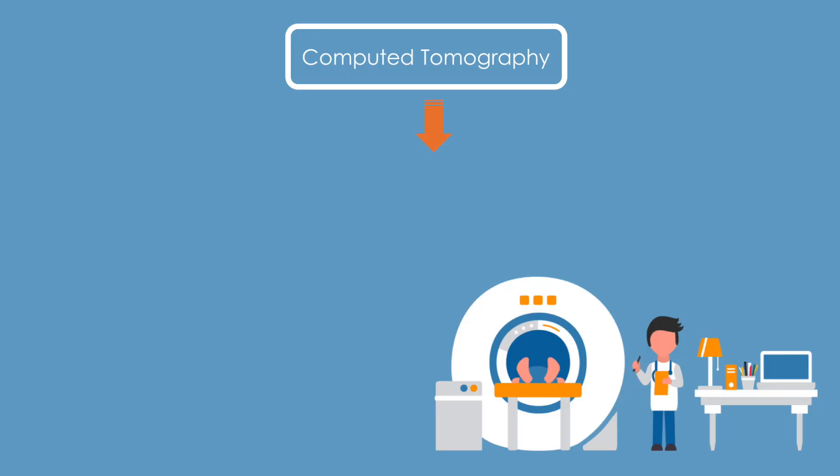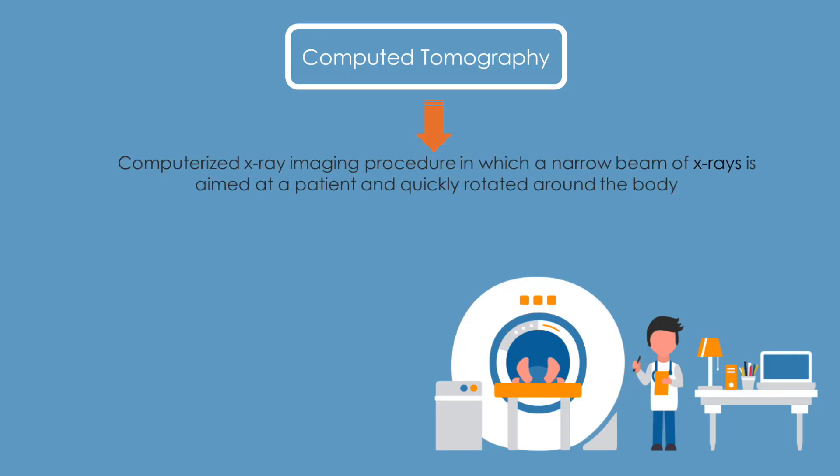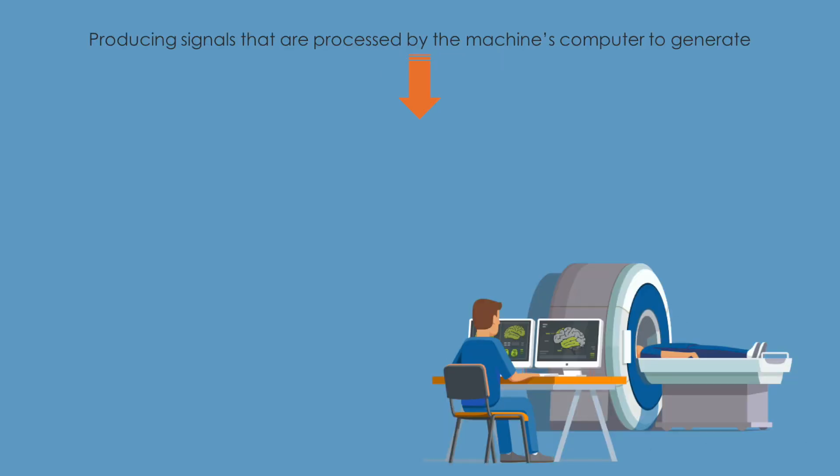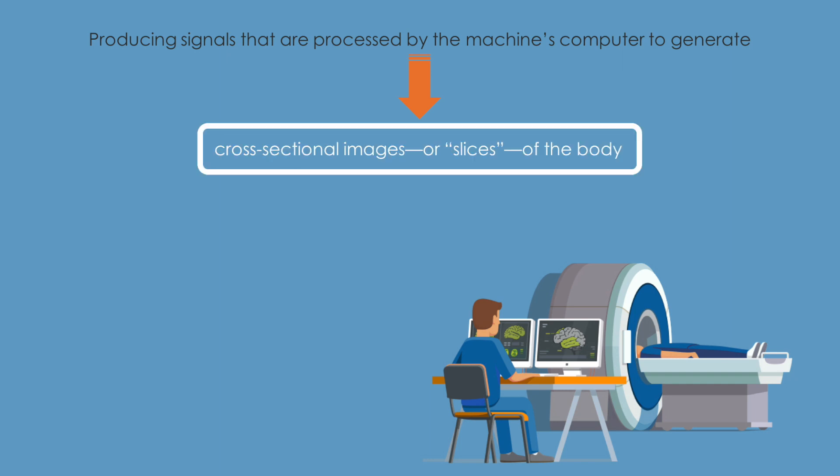Computed tomography is a computerized x-ray imaging procedure in which a narrow beam of x-rays is aimed at a patient and is quickly rotated around the body, producing signals that are processed by the machine's computer to generate cross-sectional images, which are also known as slices of the body.